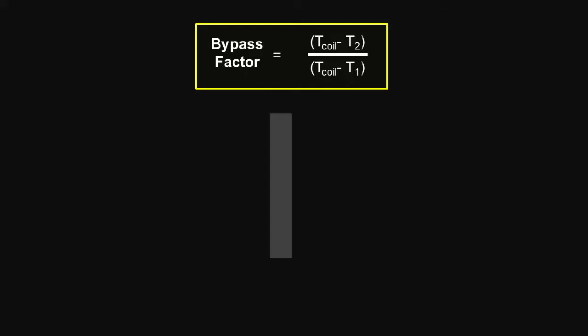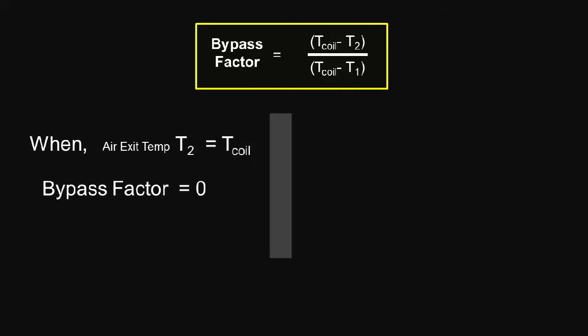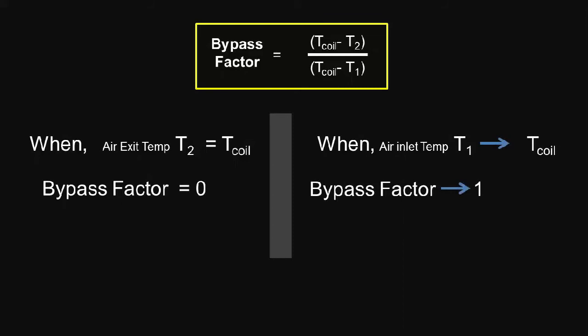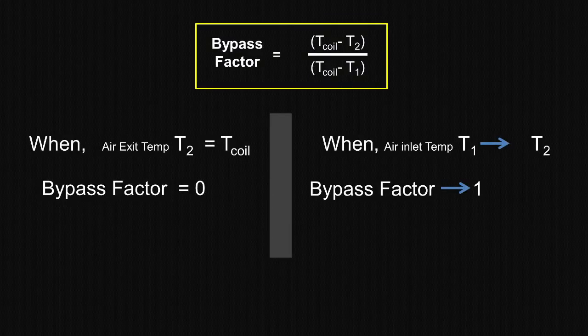When the temperature of air leaving the coil equals the temperature of the coil, the bypass factor becomes zero. Whereas when the temperature of air leaving the coil approaches the entering air temperature, the bypass factor approaches 1.